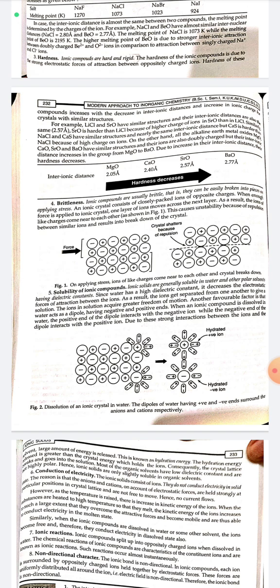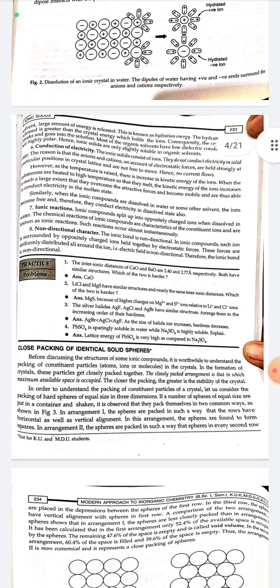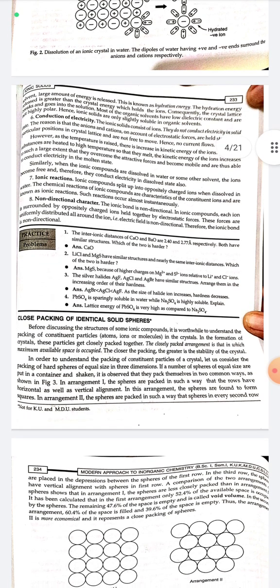Solubility: ionic solids are generally soluble in water and other polar solvents having high dielectric constant. Water has a high dielectric constant, which decreases the electrostatic force of attraction between the ions, allowing the ions to get separated into solution. Water also acts as a dipole — the positive ends of the water dipole interact with negative ions while the negative ends interact with positive ions. Due to this strong interaction between the ions and the solvent, a large amount of energy called hydration energy is released. If the hydration energy released is greater than the crystal lattice energy, the crystal lattice breaks and the compound goes into solution.